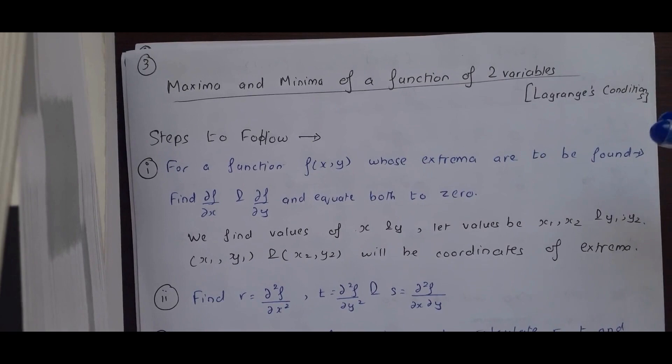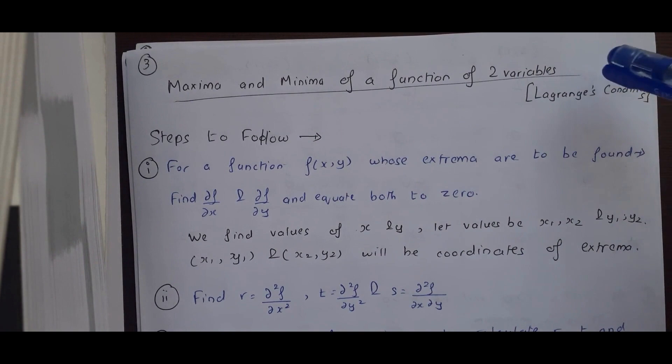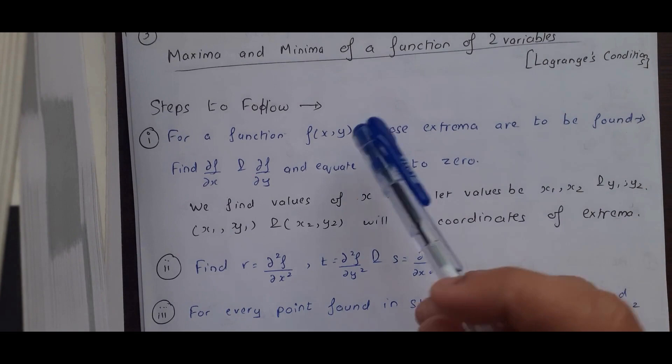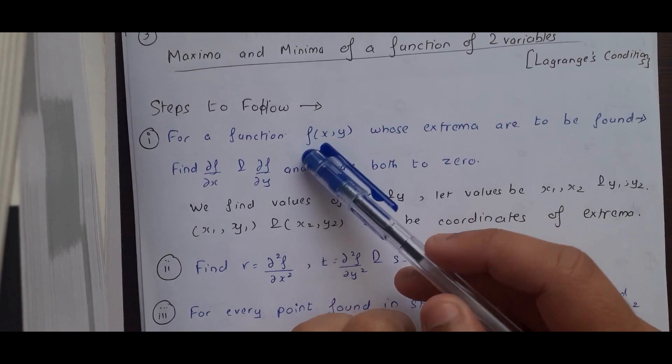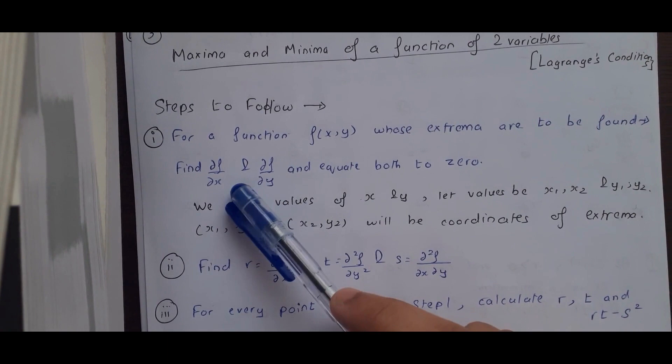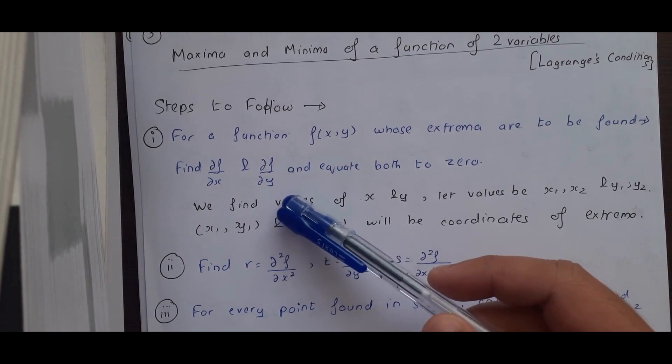Hello everyone. Moving on to the next topic of module 3: maxima and minima of a function of two variables using Lagrange's conditions. For a function f, the extrema has to be found. Firstly, we need to find the first derivative ∂f/∂x with respect to x and ∂f/∂y with respect to y, and then equate both values to zero.